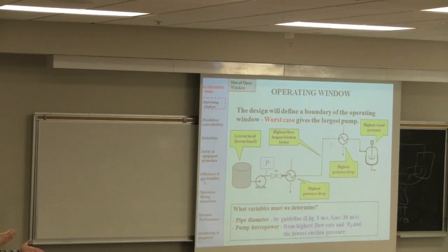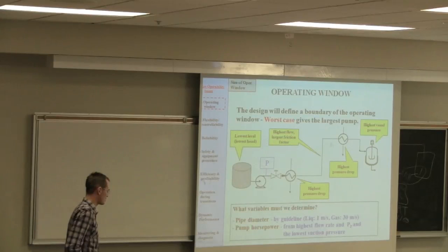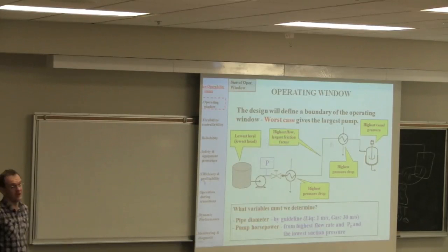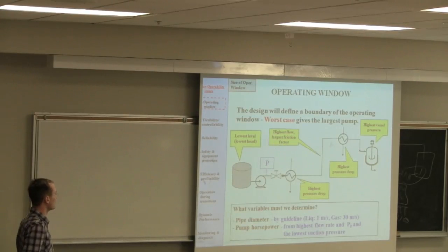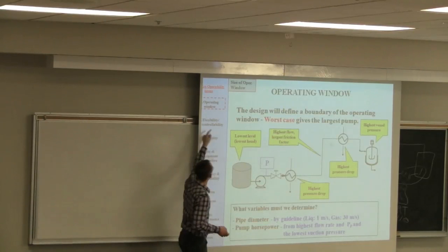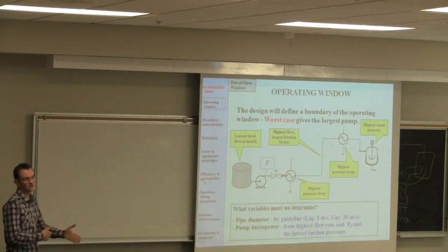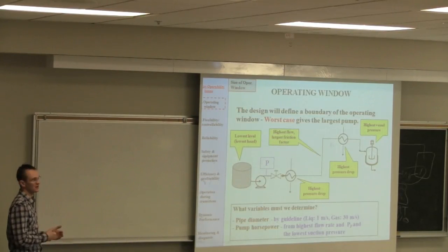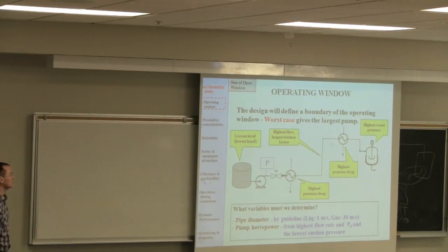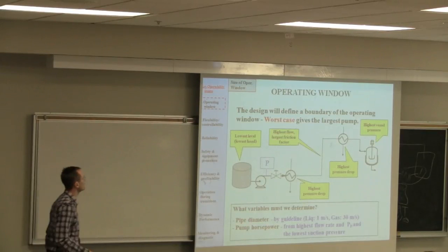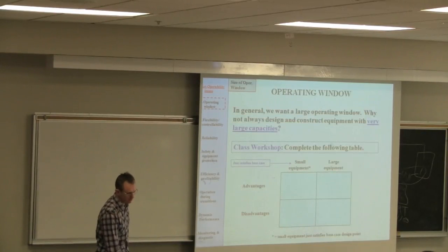Secondly, identify the lower and upper bounds for them and then do simulations for those combinations. Now, the number of simulations can quickly get unmanageable, so we tend to just pick the worst combination and make sure that the process can operate at steady state for those combinations. The next class on process dynamics and control is going to look at dynamic operations. But for now, we're operating at steady state.